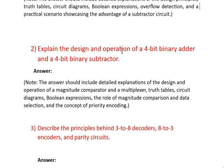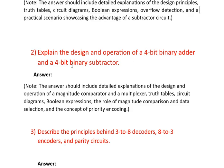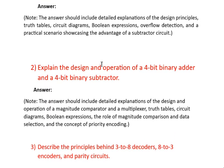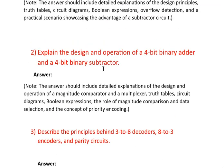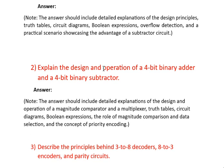The second question — I will provide it in the comment box and description box as well. That question is about multiplexer and magnitude comparator. Your answer should include truth tables, circuit diagrams, Boolean expressions, the roles in magnitude comparison and data selection, and the concept of priority encoding. Priority encoding was also included in that question, so go through the comment box to find it.